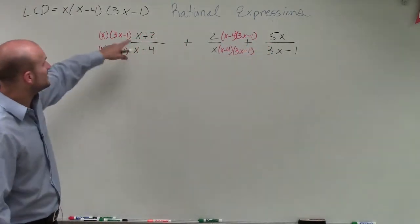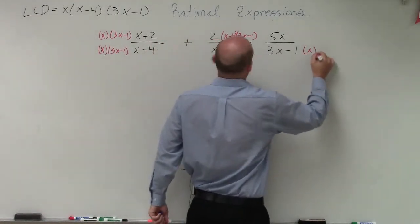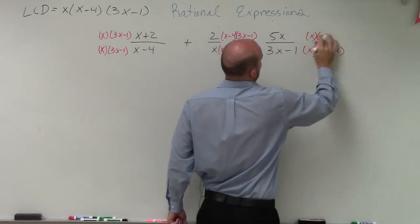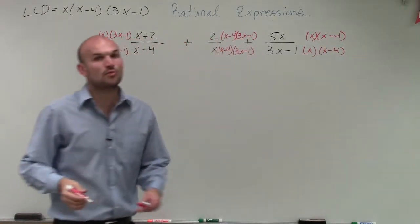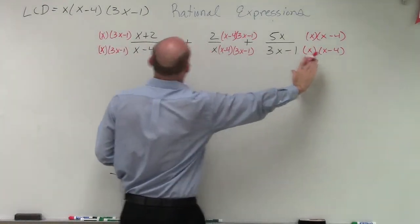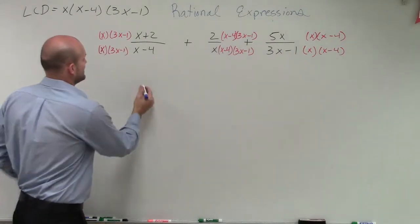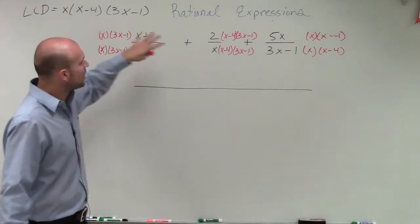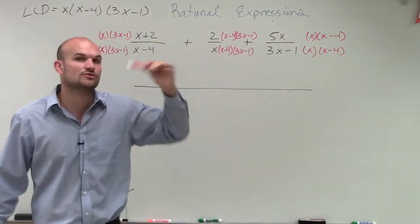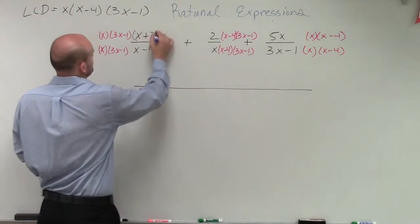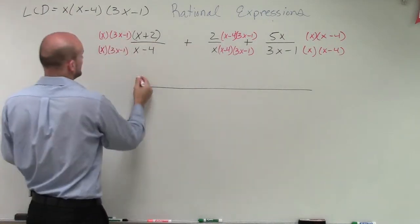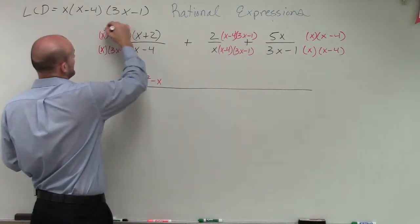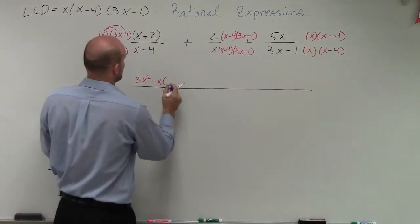Over here on my last term, I already have (3x minus 1), but I need to make sure I have x times (x minus 4). Since I'm multiplying three terms together, I'm going to multiply the red terms first and then multiply by our terms in black. So here, what I'm really multiplying (x+2) by is (3x²−x), applying the distributive property, and that result is then multiplied by (x+2).